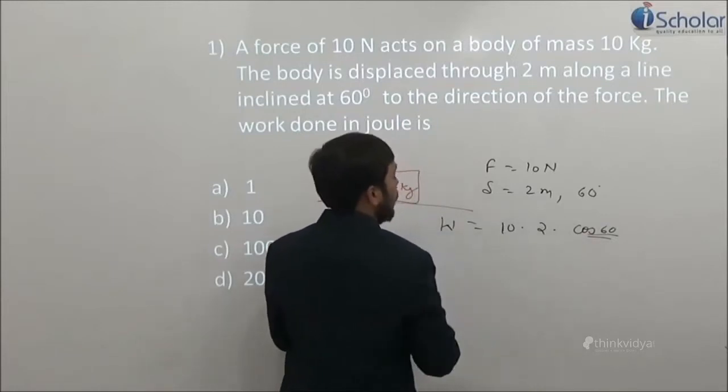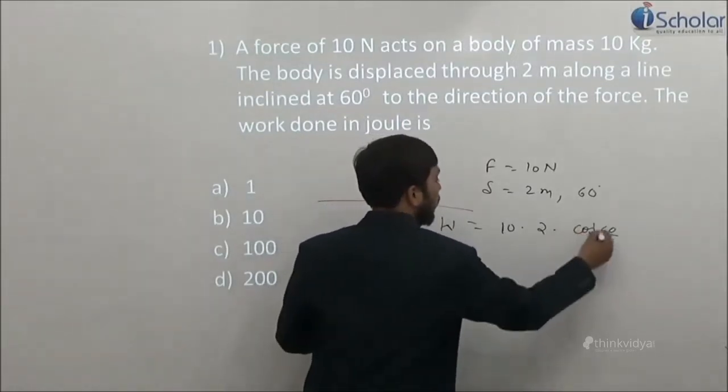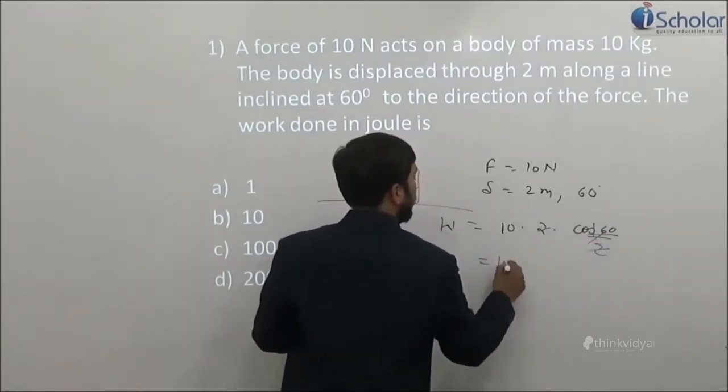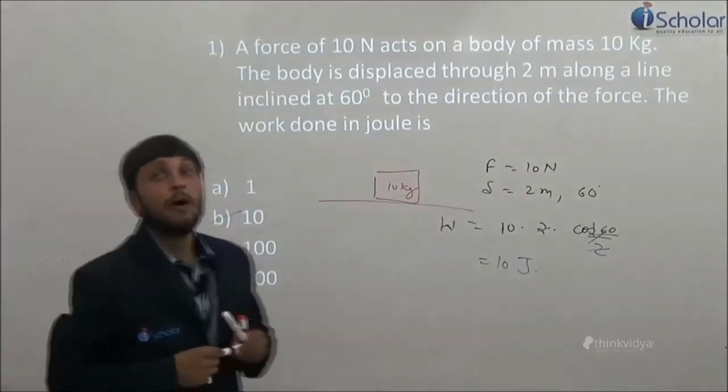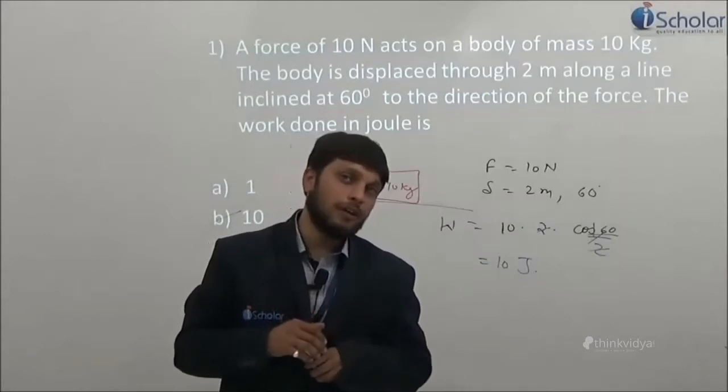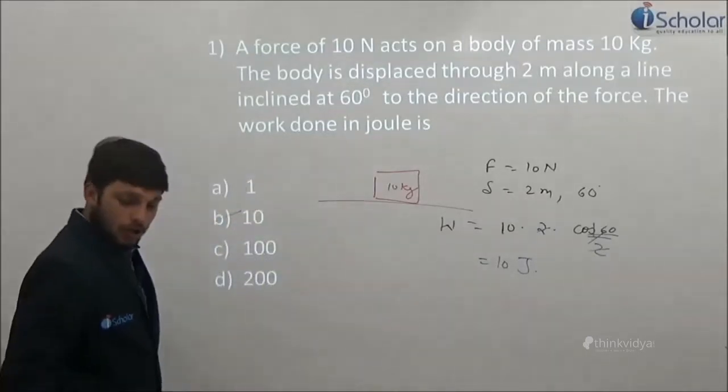The work done in joules is work equals F S cos theta. This is equals to 10 times 2 times cos 60, which is 1 by 2. So the answer is 10 joules. Joule is the SI unit of work done.